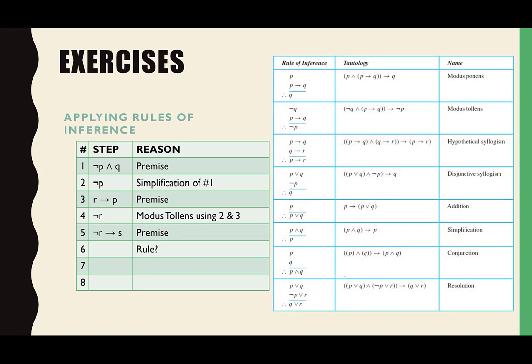With that being the case — we have not-R matching the antecedent, therefore we can conclude S. That's modus ponens. Now we have S. Let's look at the fourth premise: 'if we take a canoe trip, then we will be home by sunset,' written as S therefore T.